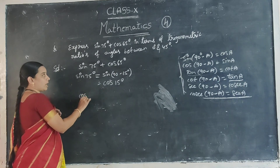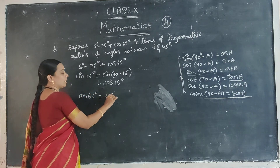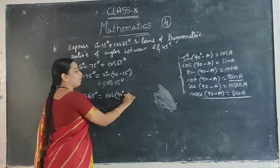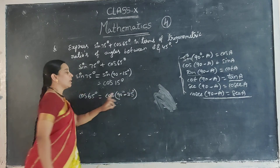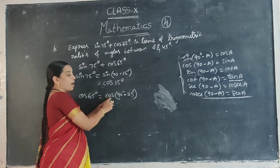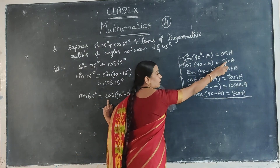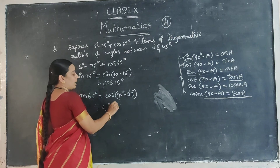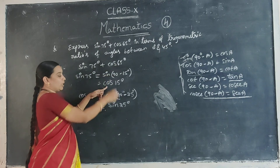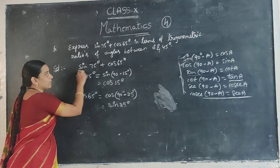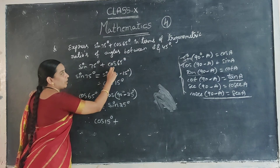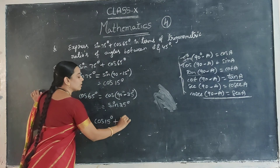Next is the second term: cos 65. Here also find the complementary angle. 90 minus how much equals 65? That is 90 minus 25 equals 65. So cos 65 is in the form of cos(90 − 25). And cos(90 − A) equals sin A, so cos 65 equals sin 25. Therefore, sin 75 plus cos 65 equals cos 15 plus sin 25.